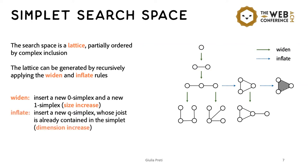The second rule is inflate. With inflate, we can increase the dimension of the simplet by adding a q-simplex whose joist is already in the same simplet. So, for example, if we start with this open triangle in orange, we obtain the filled triangle.